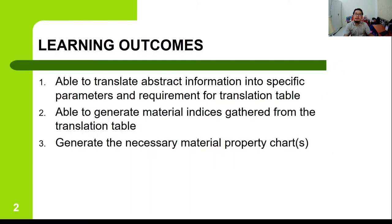For today's learning outcome, our aim is to generate the material property chart. To do that, we need to understand how to translate information from abstract format into specific requirements and parameters. From those specific requirements, we generate the translation table, and from the translation table we generate the material index, and finally the material property chart.